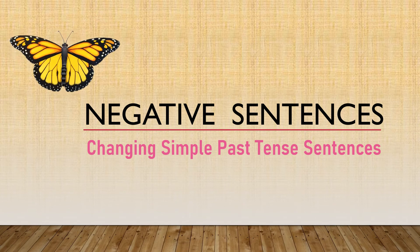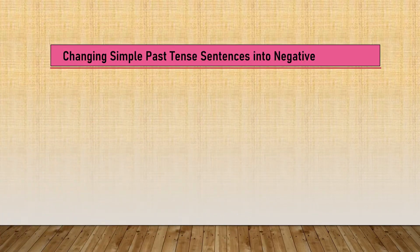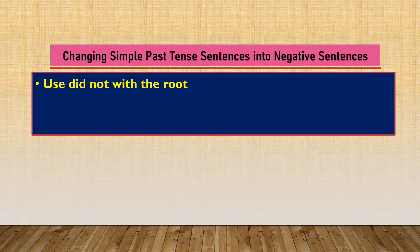Now we move on to the next level of changing positive sentences into negative sentences. Let us learn how to change simple past tense sentences into negative sentences. Use 'did not' with the root form of the verb — just like we were using 'do not' or 'does not' with the root form of the verb in the previous sentences, now we are going to use 'did not' with the root form of the verb.